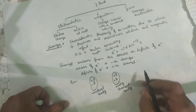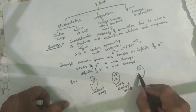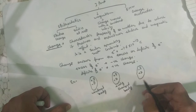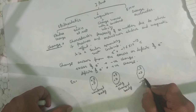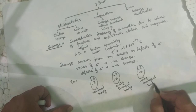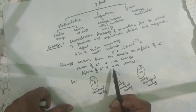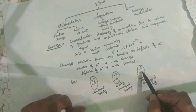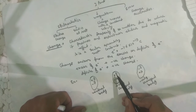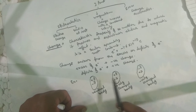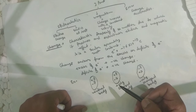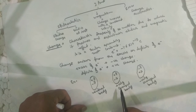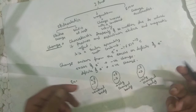If the number of negative charges is greater than the number of positive charges, this body will be negatively charged. Excess of electrons means negative charge; deficit of electrons means positive charge. So according to the number of electrons, you can identify whether a body is positively charged or negatively charged.